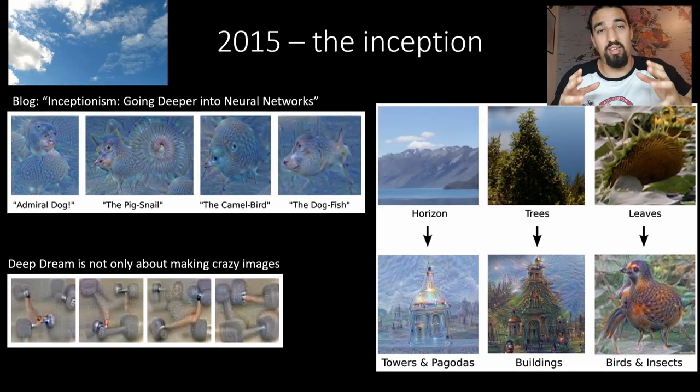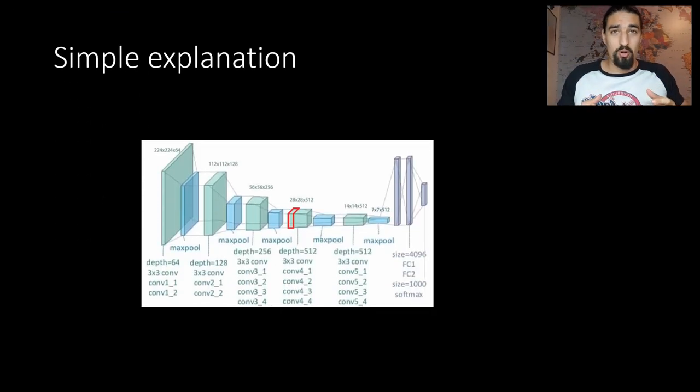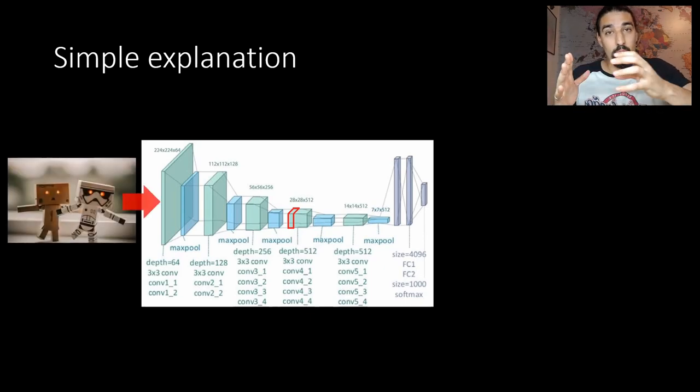Let's get a bit deeper into how the thing actually works. You have a pre-trained neural network as I already said, pre-trained on some classification dataset like ImageNet or MIT Places 365.